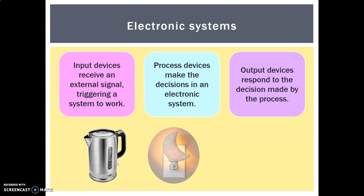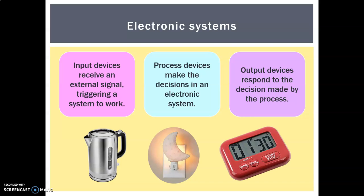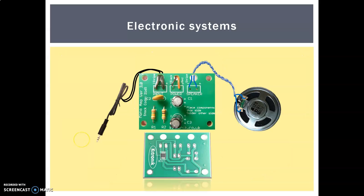For an automatic night light on your landing, the input is the lack of light — it gets dark enough and triggers the sensor. The process devices are a series of components, and the output is the light turning on. For a kitchen timer, the input is the buttons you're setting and the start button. The process is quite a complicated series of chips and components, and the output is the alarm telling you your food is ready.